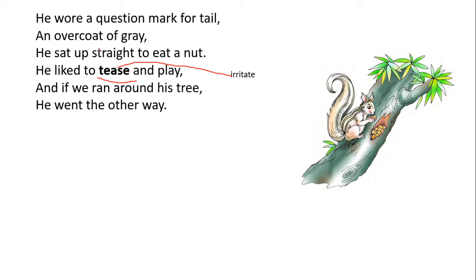In this stanza, there is a physical description of squirrel. The squirrel is grey coloured and therefore the poet says that he wears an overcoat of grey. His tail is twisted like a question mark. Further, the poet describes the food that the squirrel mostly enjoys. He loves to eat nuts.